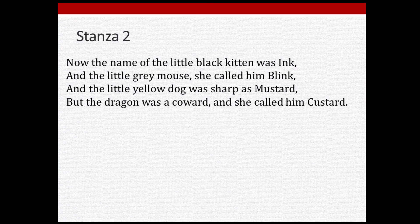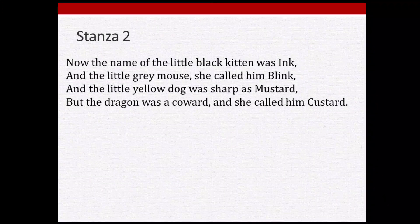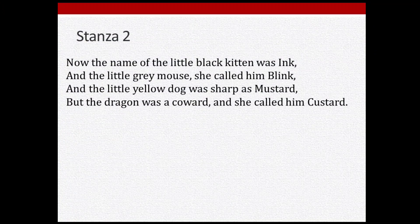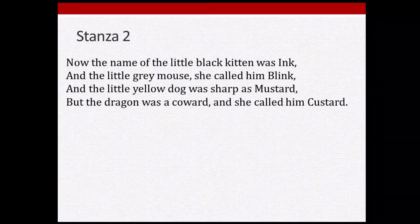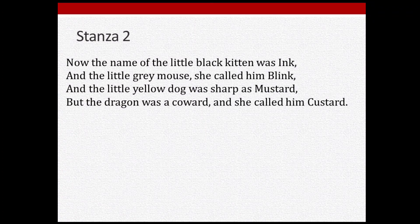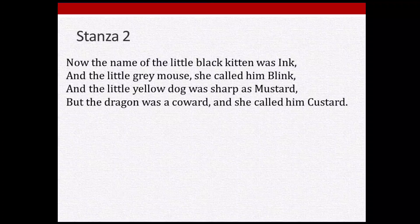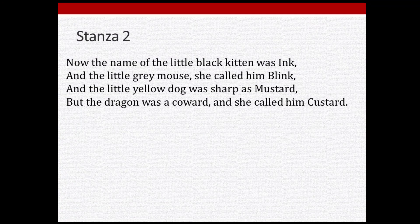Before moving to the next stanza, let us check the rhyme scheme. Ink rhymes with Blink — so A-A; Mustard rhymes with Custard — so B-B. The rhyme scheme of this stanza is A-A-B-B. In fact, every stanza in this poem has the A-A-B-B rhyme scheme because the last words of the first two lines rhyme with each other, and the last words of the next two lines rhyme with each other.